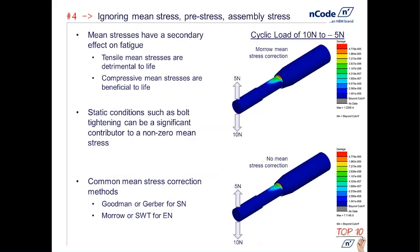The fourth mistake on our list has to do with ignoring mean stresses, pre-stresses, or assembly stresses. A lot of times when we see a very simple curve, the mean stress is assumed to be zero, and the primary driver of fatigue is going to be the size of the cycle. However, mean stress is going to have a secondary effect on fatigue. In general terms, tensile mean stresses will be detrimental to fatigue, and compressive mean stresses can be beneficial to fatigue.